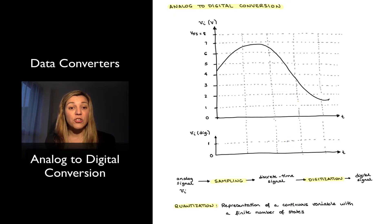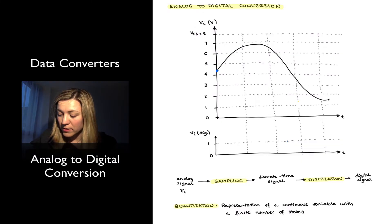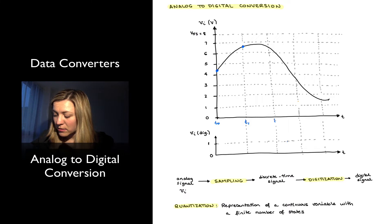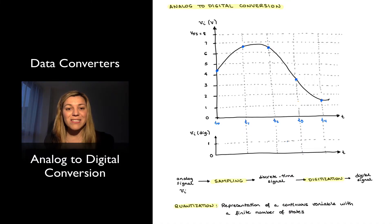Sampling refers to measuring the signal at periodic time intervals, which are known as the sampling times or sampling instances. I sample my analog signal at instances T0, T1, T2, T3, and T4. Once I have sampled my signal, what I have is a discrete-time signal. It's still continuous in amplitude — it can take any value between 0 and 8 volts — but it is discrete in time because I only have information at those particular sampling instances.